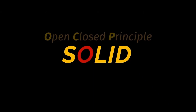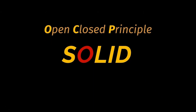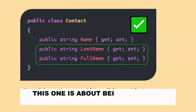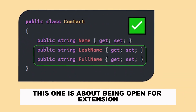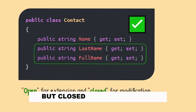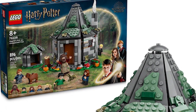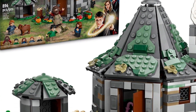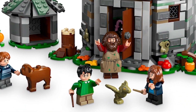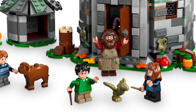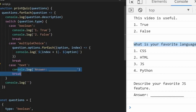Next up, the O, which stands for the Open and Closed Principle. This one is about being open for extension but closed for modification. Think of it as a Lego set — you can add to it endlessly with new pieces, but the base set remains unchanged. Your code should be just as versatile.